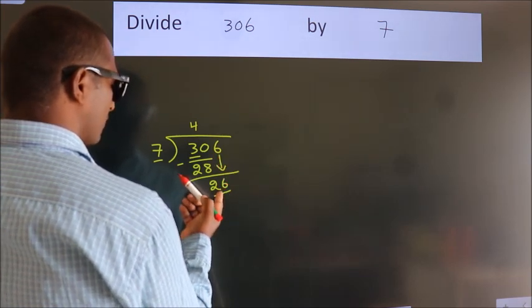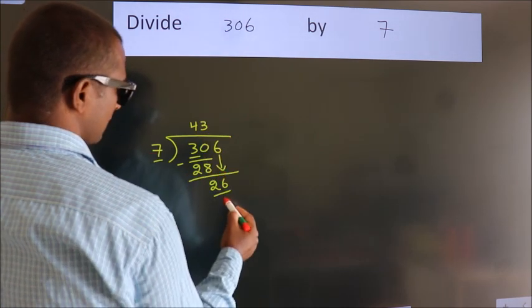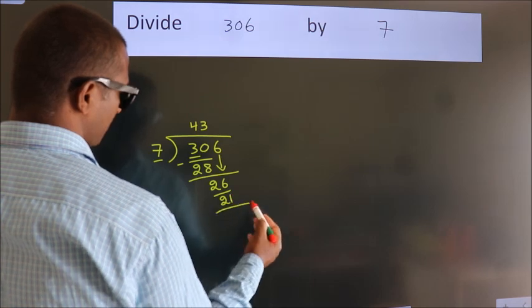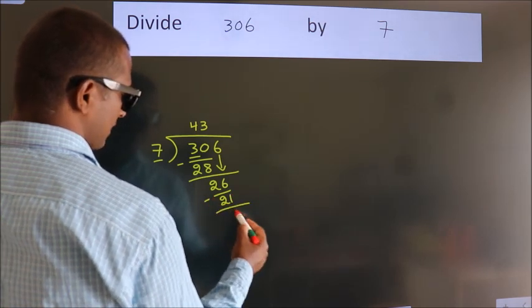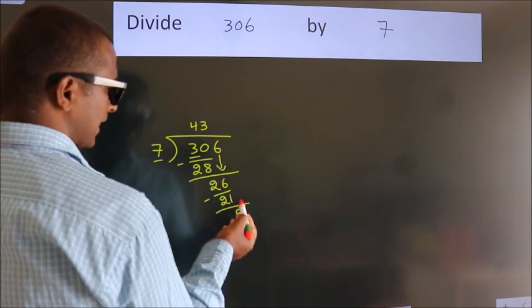A number close to 26 in 7 table is 7 threes 21. Now, we subtract. We get 5. After this, no more numbers to bring it down.